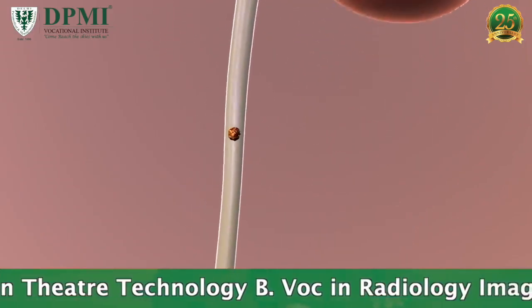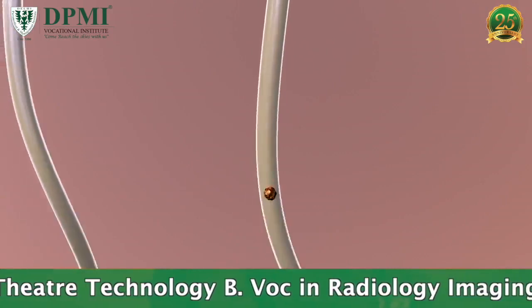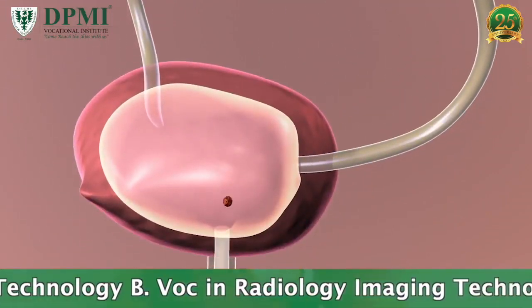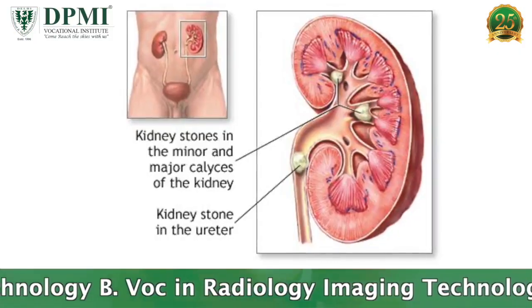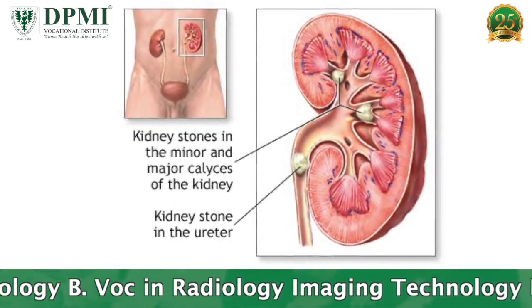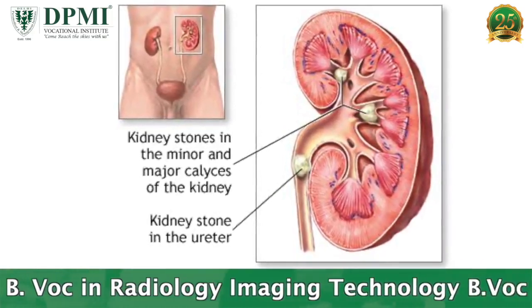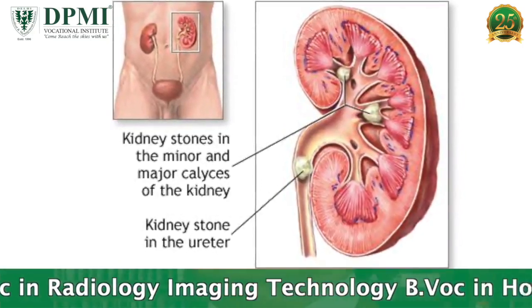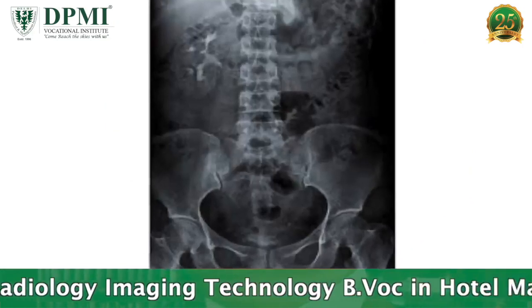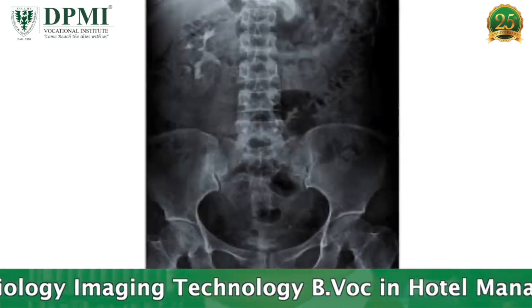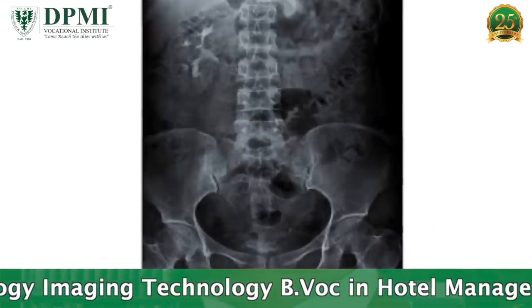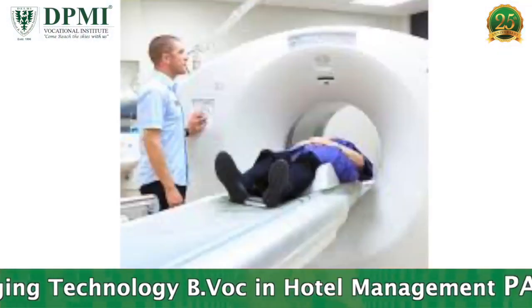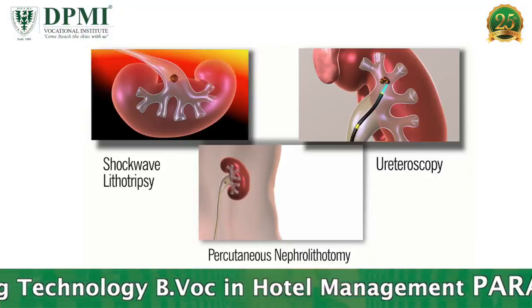Hematuria and painful urination are the most common complications. A kidney stone which gets blocked in the ureter will lead to swelling and infection in the kidney. The diagnosis of kidney stones is based on X-ray, ultrasound, and CT scan.